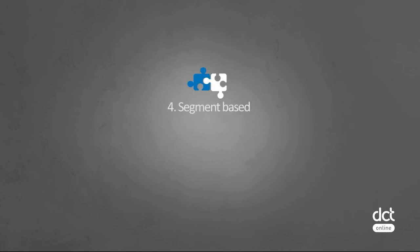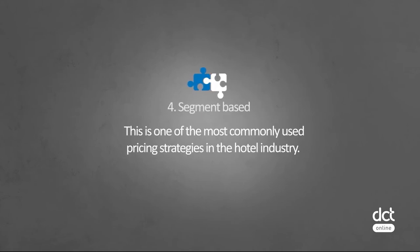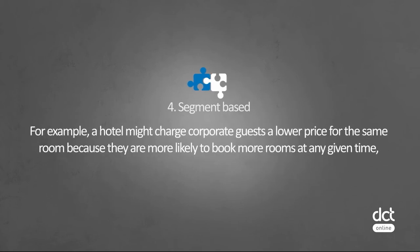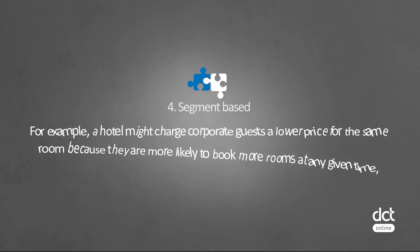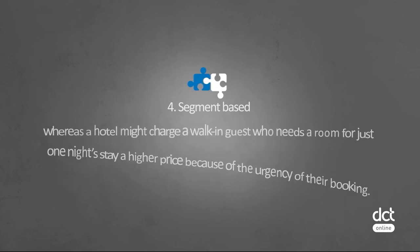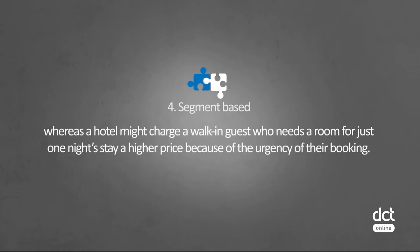Four, segment based. This is one of the most commonly used pricing strategies in the hotel. For example, a hotel might charge a corporate guest a lower price for the same room because they are more likely to book more rooms at any given time, whereas a hotel might charge a walk-in guest who needs a room for just one night stay a higher price because of urgency in their booking.